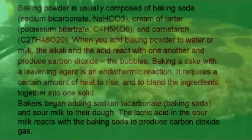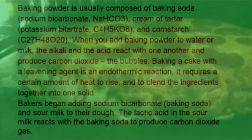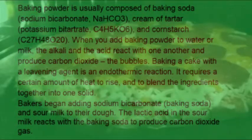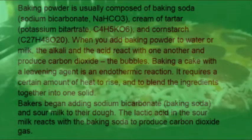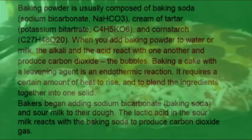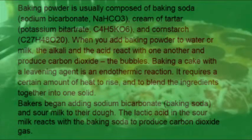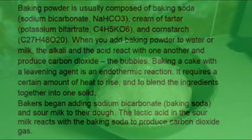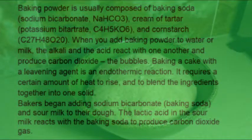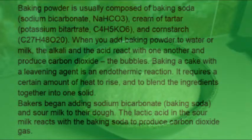Baking a cake with a leavening agent is an endothermic reaction. It requires a certain amount of heat to rise and to blend the ingredients together into one solid. Bakers began adding sodium bicarbonate to baking soda and sour milk to their dough, and the lactic acid in the sour milk reacts with the baking soda to produce carbon dioxide gas.